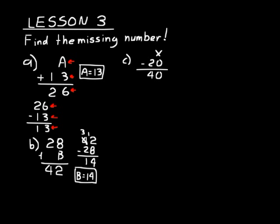Now let's try one with subtraction. X minus 20 equals 40. Let's think about this — what minus 20 would equal 40? Maybe you can do that one in your head: 60 minus 20 equals 40. But how could we figure that out using a fact family? We use an addition fact family: 40 plus 20 equals 60. So X equals 60.